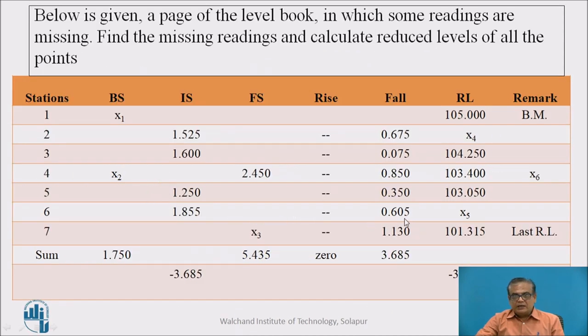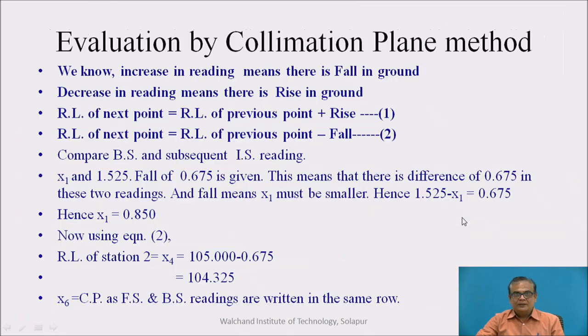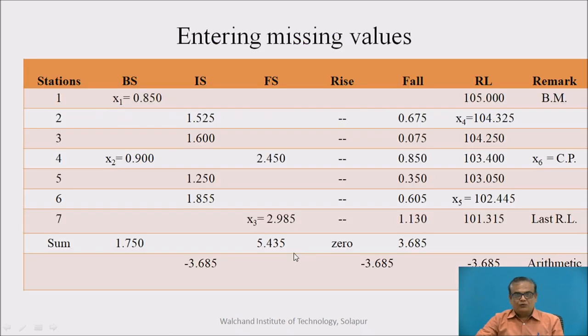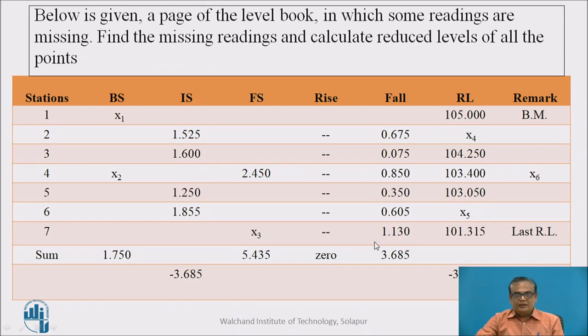Now, which is the next unknown value? We can see here, X5 is next unknown. So, one can easily find X5 from these two values. RL of previous station and fall in ground is given. So, 103.050 minus 0.605 must be equal to X5, RL of next point. So, let us do this calculation. So, what we get? X5 is equal to 102.445. So, enter it here. X5 is 102.445.